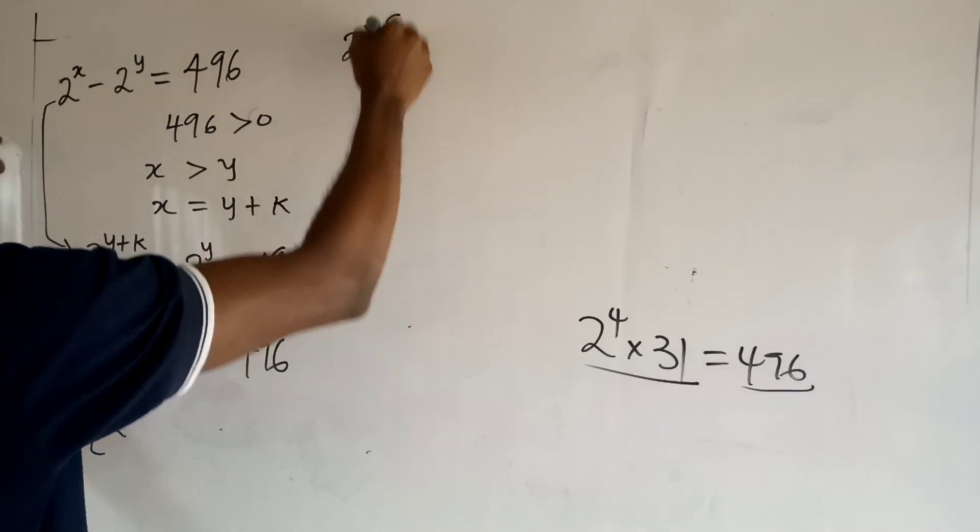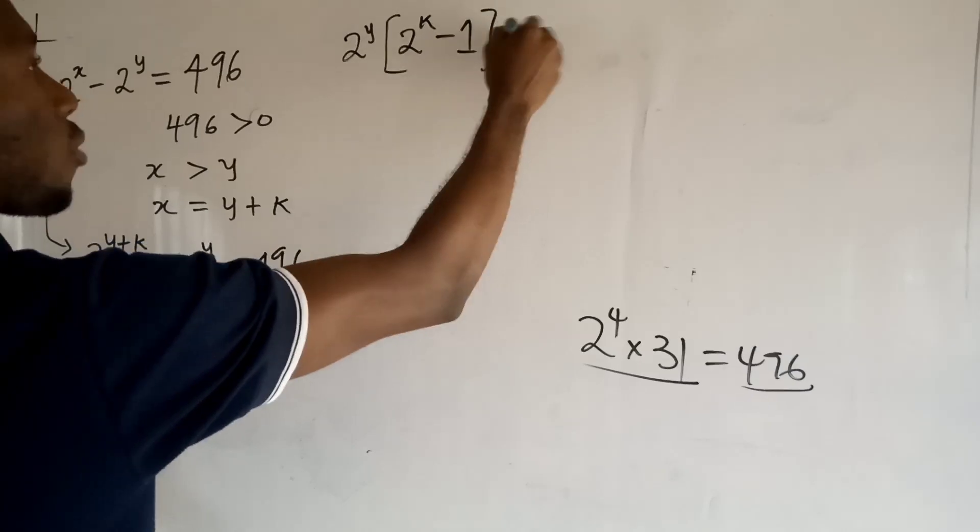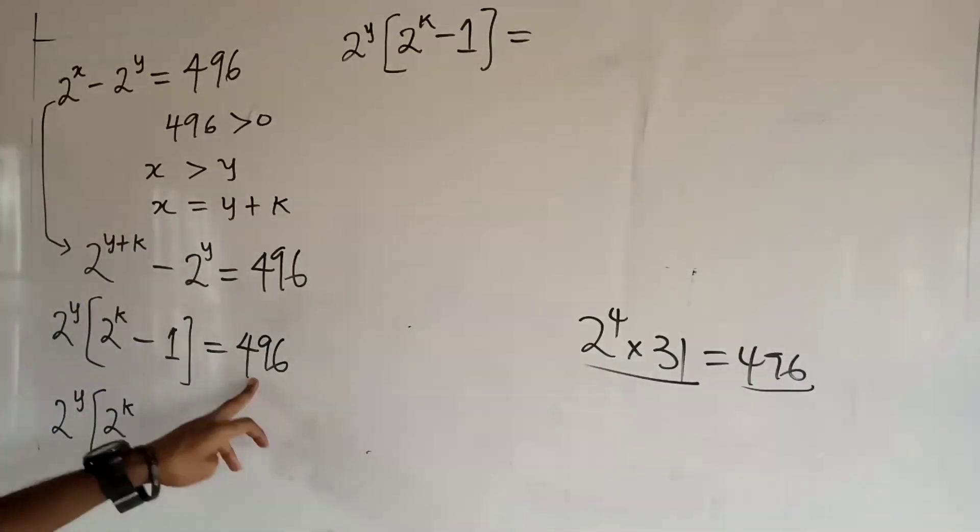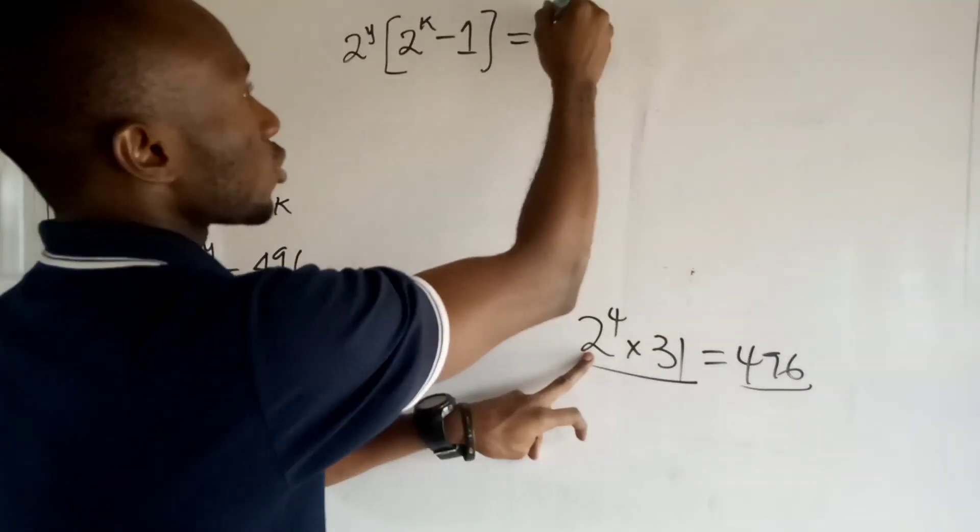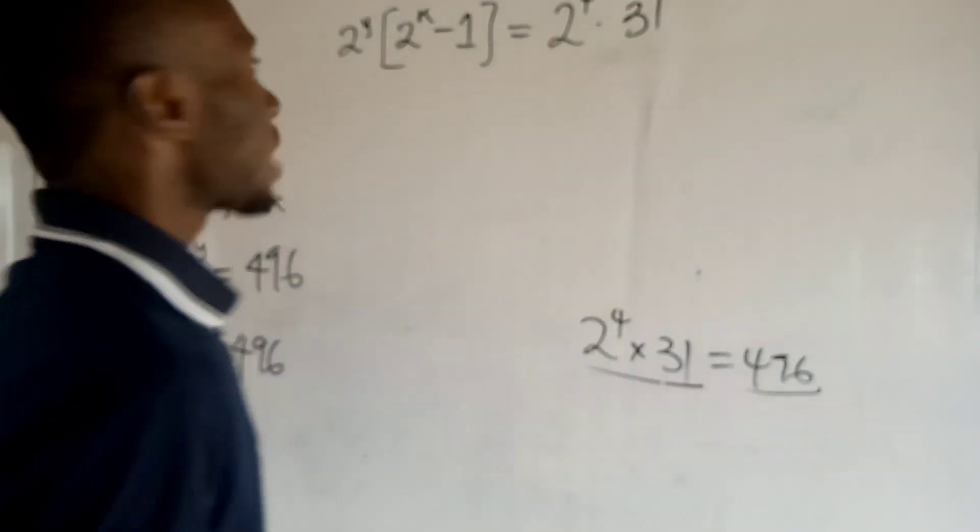Instead of writing 496 right now, I'm going to write 2 to the power of 4 times 31.